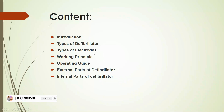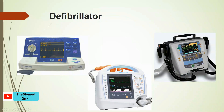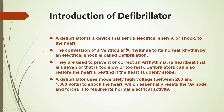After that, types of electrodes, working principle of the defibrillator, operating guides on how to operate this machine, then the external part of the defibrillator, and after that I will show you the internal part of the defibrillator. There are three different types of defibrillator which are commonly used.